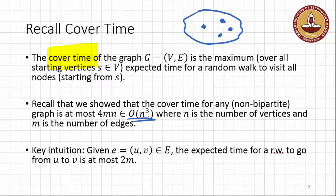And if you recall, the key intuition for the proof was to look at this graph. If you look at an edge in this graph, let's say this is vertex U and this is vertex V, and now let's say you start a random walk from U. What we first showed was that the expected time for a random walk to go from U to V is at most 2M.